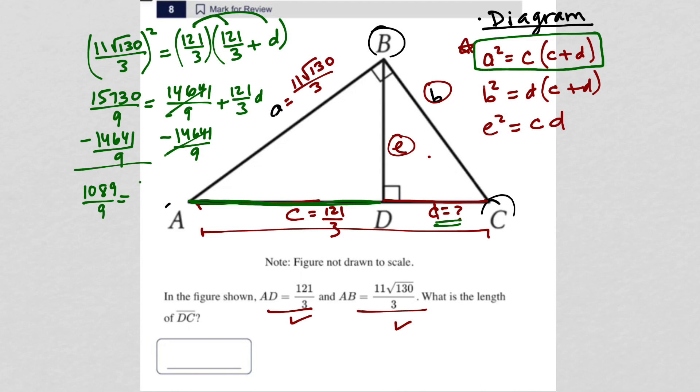So I have from here, I'm just solving for D. So I can multiply by the reciprocal. So I multiply by 3 over 121. The 3 cancels to 1, makes the 9 a 3. 121 goes into itself one time. 121 goes into 1,089 nine times.